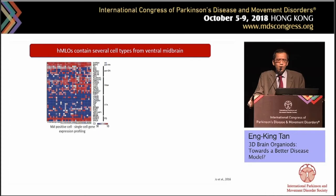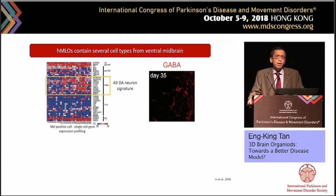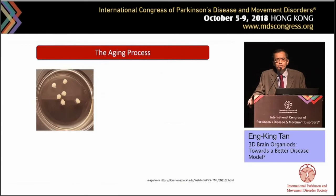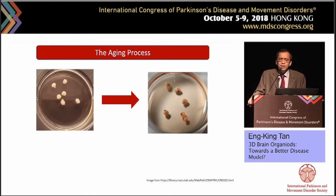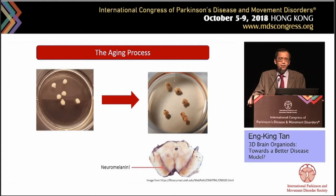We then performed single-cell analysis — each column indicates a single cell — and you can see that the gene expression signature in our organoids simulates what we typically see in A9 dopamine neurons. We also see in the organoids the GABA markers and some glial cells. Very interestingly, I was curious about what happens as the organoid ages. After long-term culture, these organoids contain visible pigments. At that point we were not quite sure what they were, but subsequently a eureka moment came — we think these are neuromelanin, as seen in the substantia nigra.